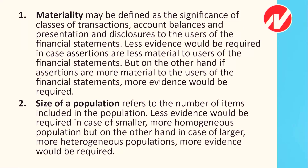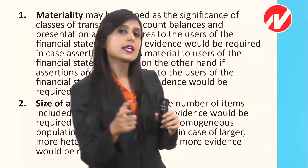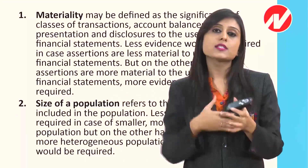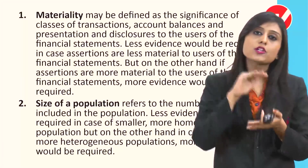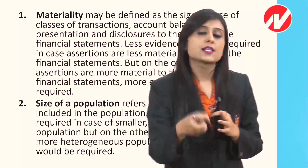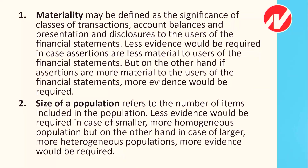Second factor: size of the population — the number of items included in the population. Less evidence would be required in case of a smaller, more homogeneous population, but in case of a larger, more heterogeneous population, more evidence would be required. If there are lakhs of transactions, the sample size will increase and more evidence needs to be gathered. If the population is small and homogeneous, sample size and evidence can be less.